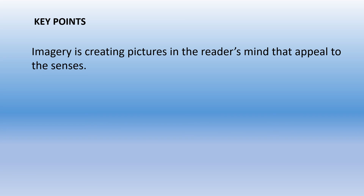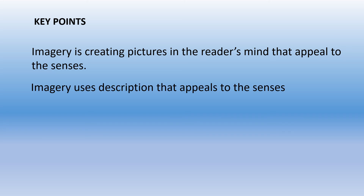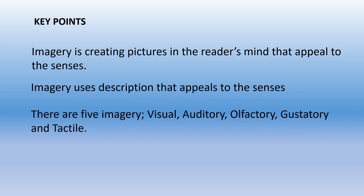To recap, here are the key points to remember. Imagery is creating pictures in the reader's mind that appeals to the senses. Imagery uses descriptive words which appeal to the senses. There are five types of imagery: visual, which appeals to the sense of sight; auditory, which appeals to the sense of hearing; olfactory, which describes what we smell; gustatory, which describes what we taste; and tactile, which appeals to our sense of touch or feel.